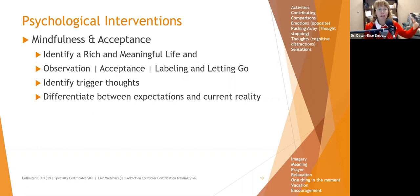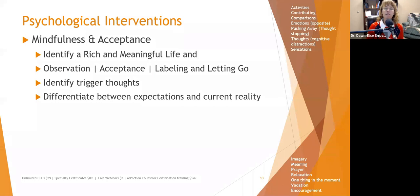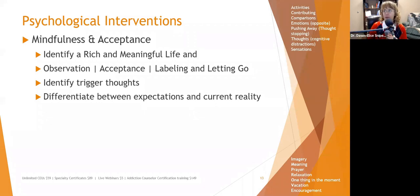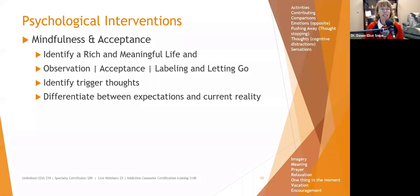For example, when working with a young person anxious about asking someone out, differentiate between expectations — what do you expect is going to happen — versus reality, what you actually know. They may expect to get rejected and laughed at, causing anxiety, but what is the reality? Do you know that anything like that is going to happen? On the PowerPoint I have the ACCEPTS and IMPROVE mnemonics designed by Marsha Linehan for dialectical behavior therapy.